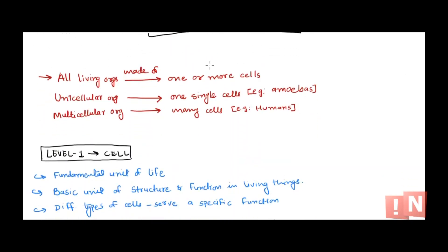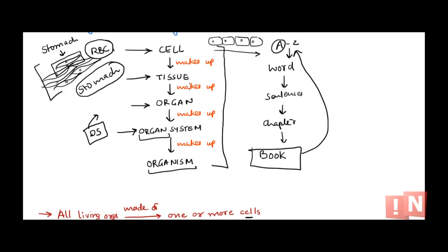All living organisms are made up of cells. The only difference is whether it's a unicellular organism — uni means one, meaning it's a single-cell organism such as amoeba — or a multicellular organism, where multi means many, so there will be many cells in that organism, such as humans.